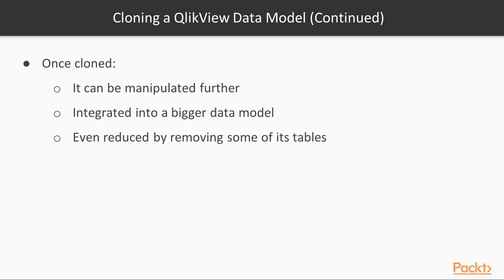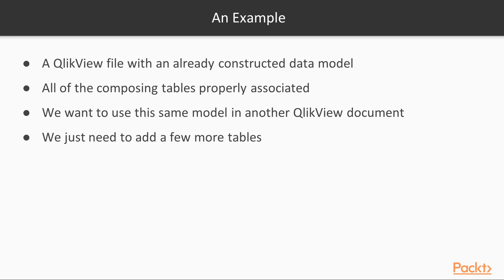Once the data model is cloned by the second ClickView document, it can be manipulated further, integrated into a bigger data model, or even reduced by removing some of its tables or data. Suppose we have a ClickView file with an already constructed data model and all of the composing tables properly associated, and we now want to use this same model in another ClickView document, adding just a few more tables.